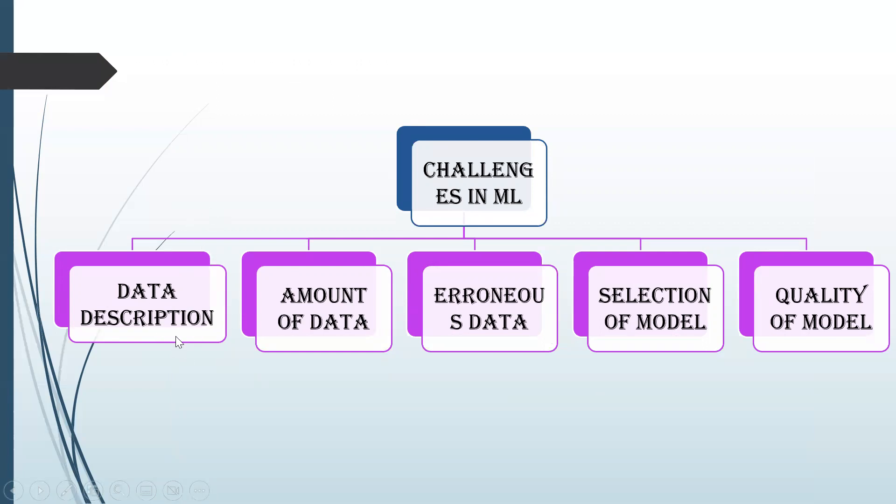The description of data is one challenging part in machine learning. Amount of data means in order to give an accurate model or output, the model must be sufficient with amount of data. The parameters to calculate the analytics must be sufficient.